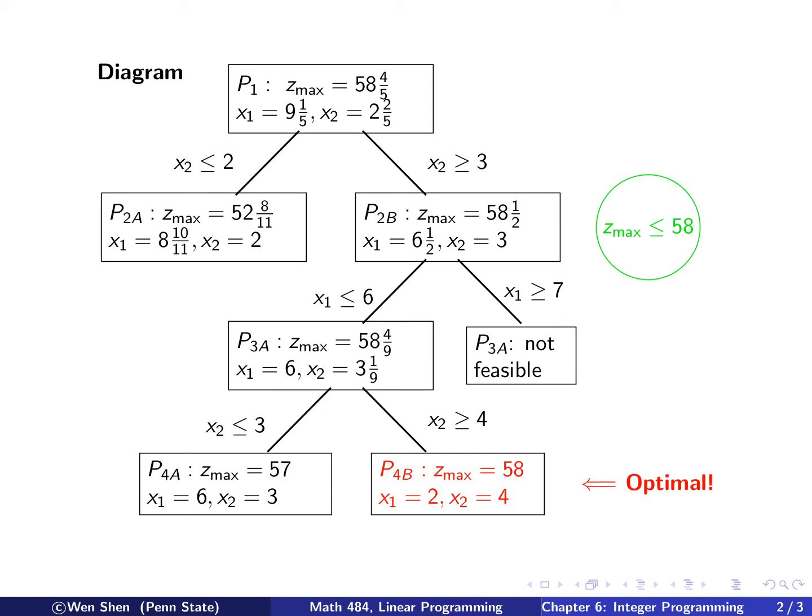we found that 4A has this solution, which is integral with a max value 57. And then 4B now has a max value 58. And it's also integral. Both of them are integral solutions.